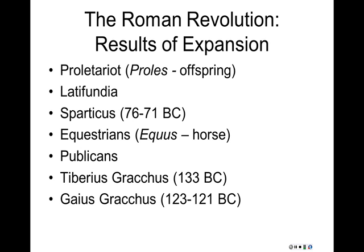These equestrians — the new money — were looked down upon by the old money, by the traditional Roman noble elite. They wanted power and influence to match their great wealth. And what got the Roman Revolution going? All these problems would eventually lead to political crisis. The traditional date marking the beginning of the Roman Revolution is the political career of Tiberius Gracchus in 133 BC.